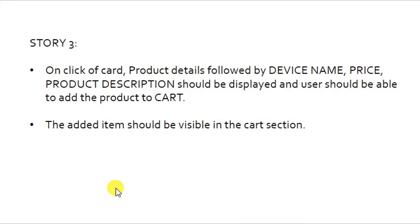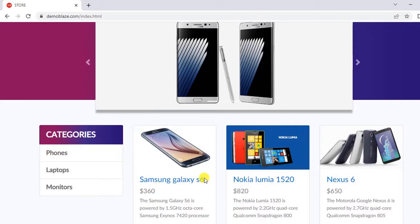On the product details page we should be able to see the device name, price, and product description. There will also be an add to cart button on that same page. On click of that button, the user should be able to add that item to the cart. We will also see how integration testing works, so watch till the end.